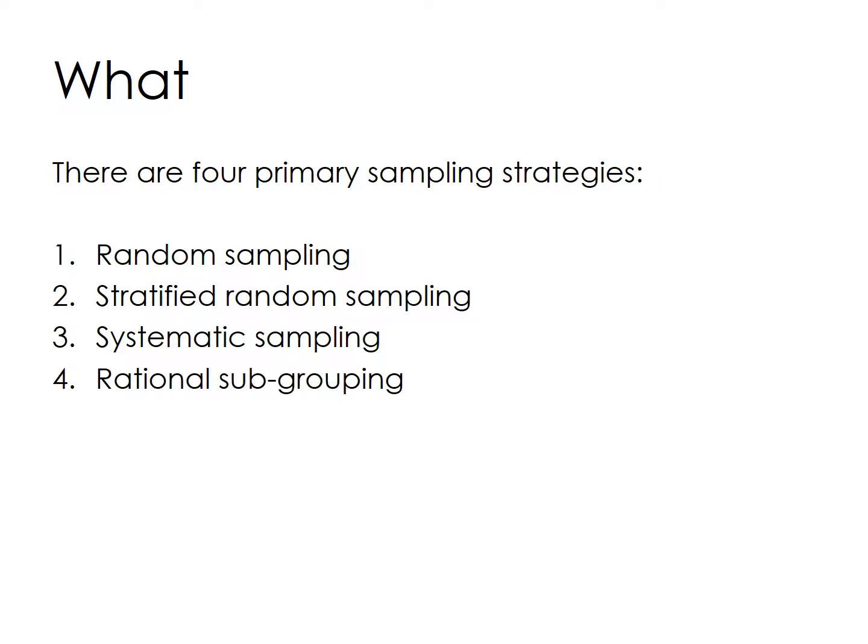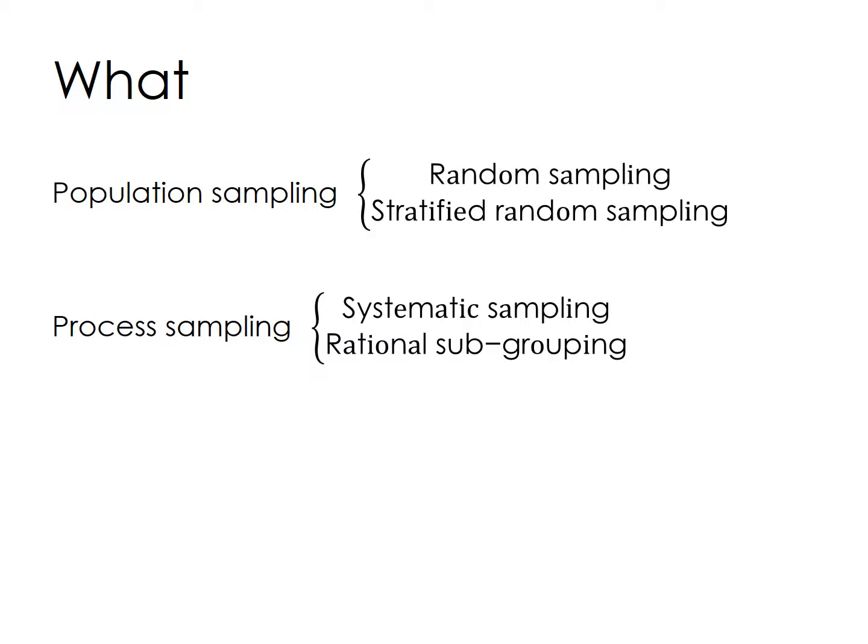There are four primary sampling strategies: random sampling, stratified random sampling, systematic sampling, and rational subgrouping. Before determining which strategy will work best, the analyst must determine what type of study is being conducted. There are normally two types of studies: population and process. With a population study, the analyst is interested in estimating or describing some characteristic of the population.